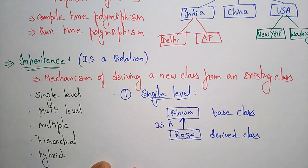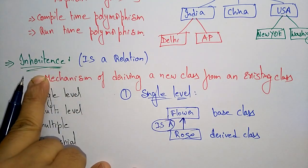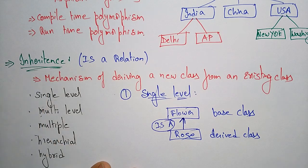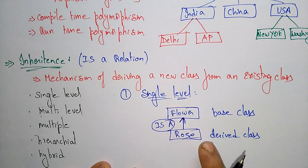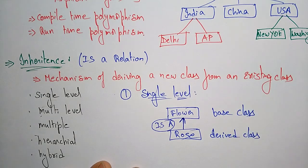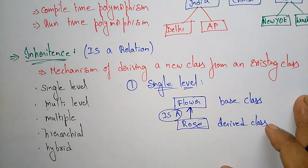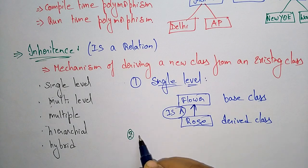This is called an IS-A relationship. We said that inheritance is an IS-A relation — rose IS-A flower, meaning it inherits the properties of the base class. This is the representation of single-level inheritance.